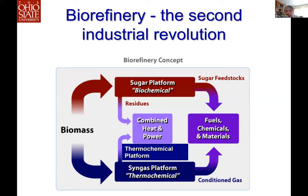The basic concept of biorefinery — also called the second industrial revolution versus the first revolution of petroleum — is that plant-based biomass can be converted to fuel, chemical, and material instead of using petroleum. There are two main platforms: one is the sugar platform or biochemical conversion, the other is the thermochemical platform or syngas platform, similar to current petroleum processes using high temperature and high pressure. In my research, we focus on the sugar platform or biochemical conversion.